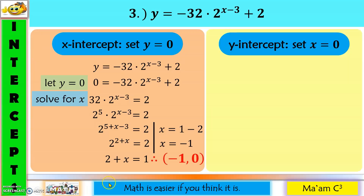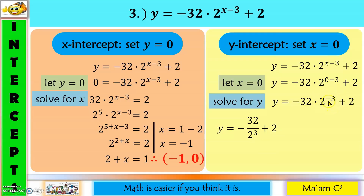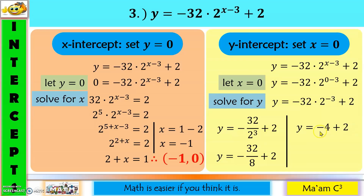For the y-intercept: let x equal zero and solve for y. Zero minus three is negative three. Bring two raised to negative three down, making the exponent positive: negative 32 over two cubed, plus two. Two cubed is eight, and negative 32 over eight is negative four. Negative four plus two equals negative two. My x is zero and my y is negative two. Therefore, the y-intercept is (0, −2).